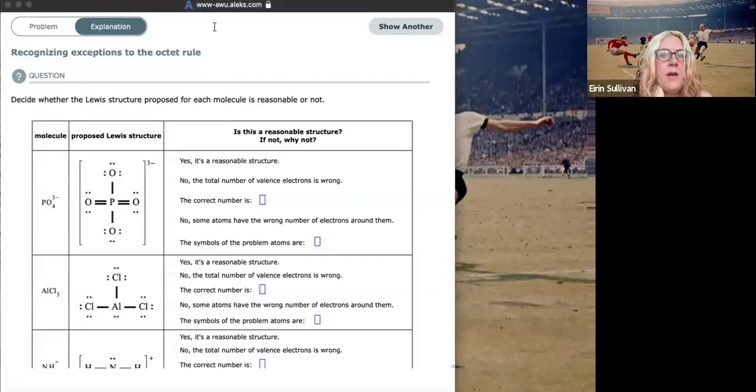Recognizing exceptions to the octet rule. There are three circumstances under which that central atom may not have eight electrons around them.